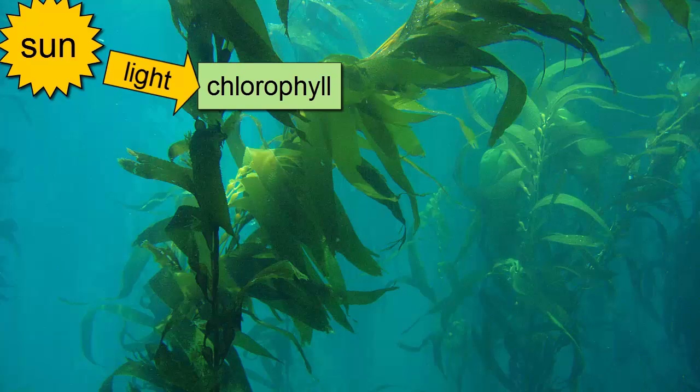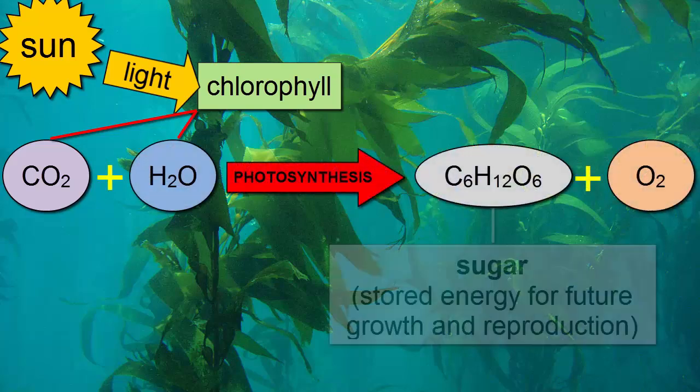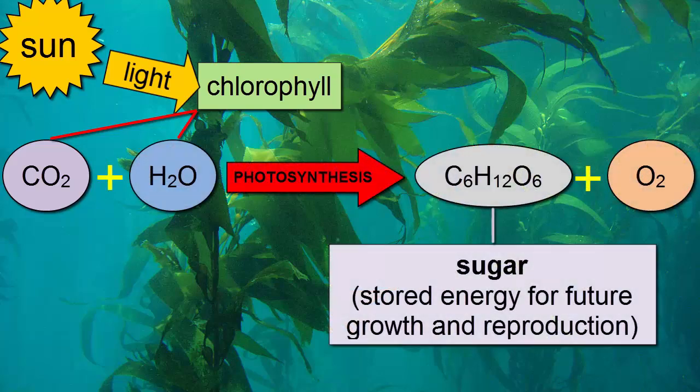Chlorophyll absorbs energy from the sun and uses that energy to combine carbon dioxide and water molecules to produce sugar molecules. Sugar is a stored form of energy, which can be converted when needed into the energy used for things like growth and reproduction.